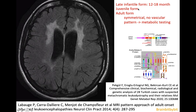There are different forms of metachromatic leukodystrophy. The infantile form is the most common one, which has a very bad disease course. Then there is the juvenile form, and more and more the adult form is identified because of the increase in imaging. And if you see symmetrical white matter involvement in adults without a vascular pattern, you should always do metabolic testing to rule out leukodystrophies.